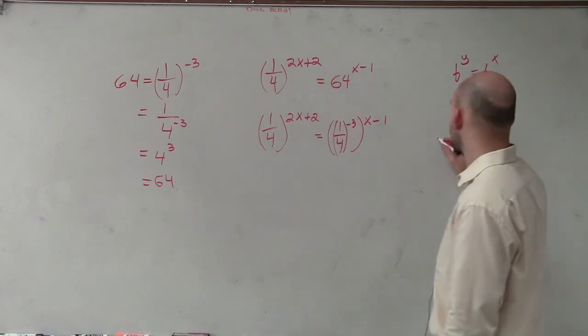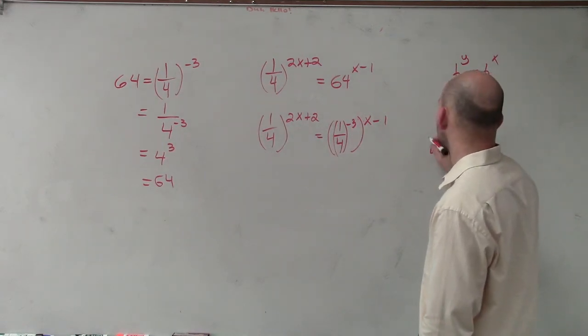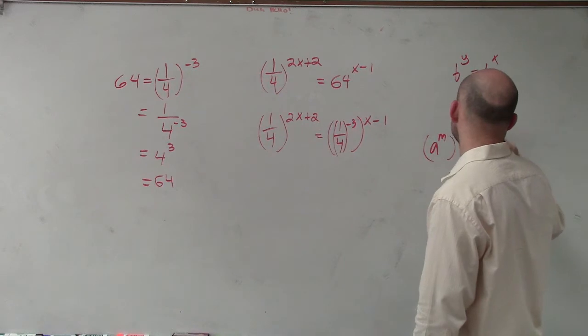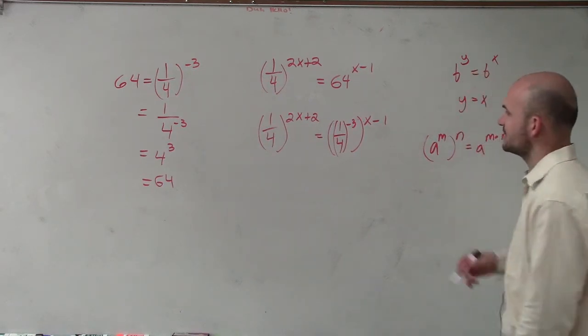Now I can apply my product property, or my power to the power property. So a to the m times n equals a to the m times n. So now I multiply that.